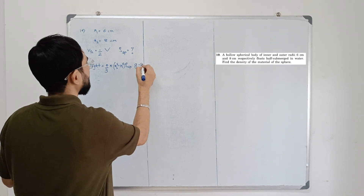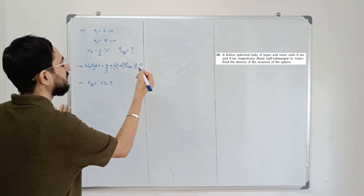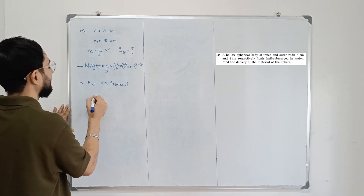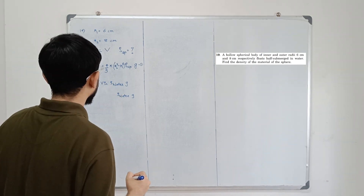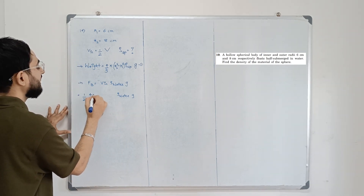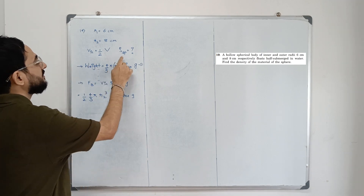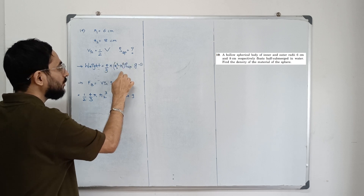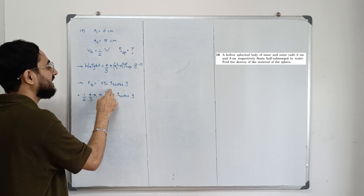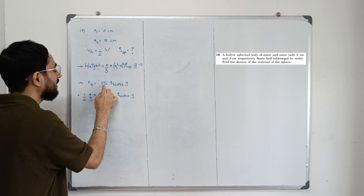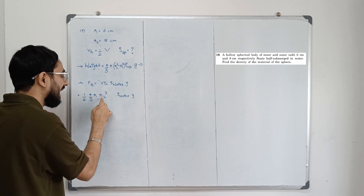Next, force of buoyancy equals the volume of the solid inside the liquid multiplied by density of water multiplied by g. The volume inside is half of the total volume. Total volume of the sphere is (4/3)πr2³ — we use just the outer radius here. So volume inside = (1/2) × (4/3)πr2³. For weight we used (4/3)π(r2³ − r1³) because of the hollow interior, but for buoyancy we consider the total outer volume displaced.